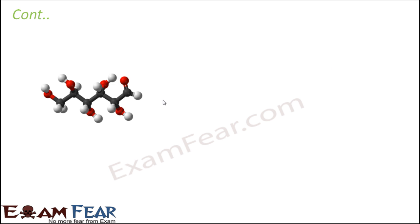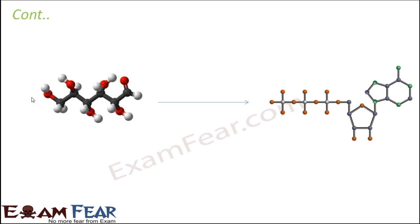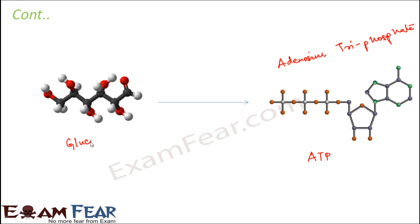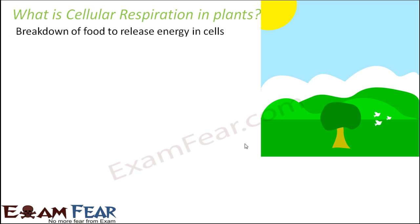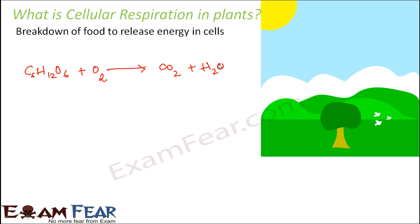During respiration, glucose gets converted into energy in the form of ATP molecules. ATP stands for adenosine triphosphate. This conversion takes place in the presence of oxygen, and this process is called respiration. In plants, during cellular respiration, breakdown of food takes place to release energy in cells. Glucose (C6H12O6) when oxidized produces CO2 plus H2O plus energy.